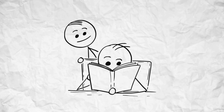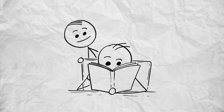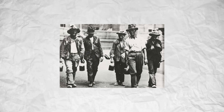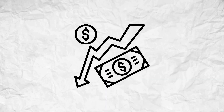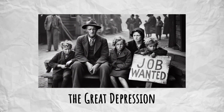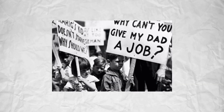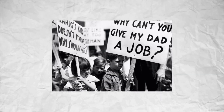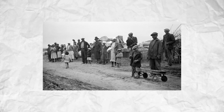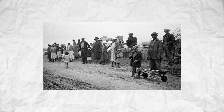However, the gold standard also had its drawbacks. For one, it limited the flexibility of governments to respond to economic crises. During the Great Depression in the 1930s, countries on the gold standard couldn't easily increase the money supply to stimulate their economies because they were constrained by their gold reserves. This inflexibility worsened the economic downturn, leading many countries to abandon the gold standard.